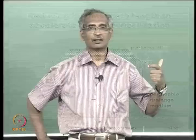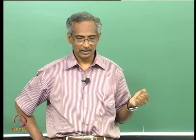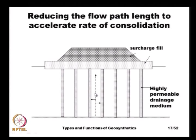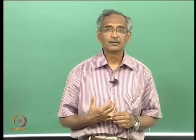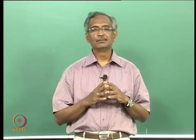If we introduce highly permeable members — either sand columns or prefabricated vertical drains — the length of the drainage path is greatly reduced, allowing water to escape very quickly. Once the water particle travels a small horizontal distance, it enters a highly pervious column and escapes rapidly. This is the principle of pre-consolidation: we reduce the flow path length so that consolidation time is reduced.